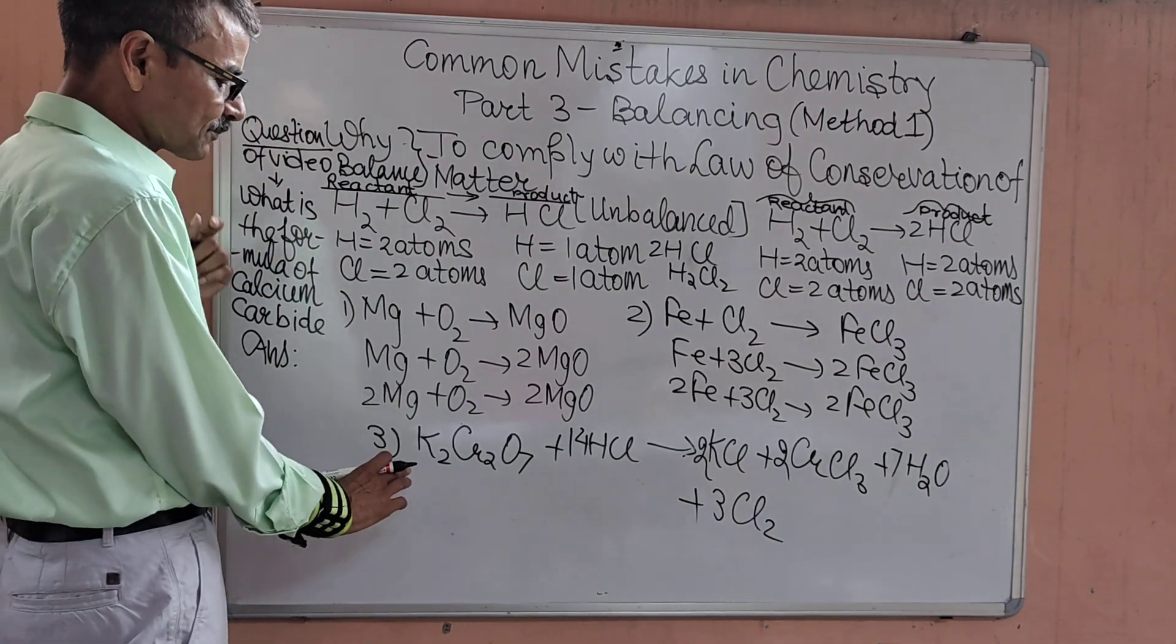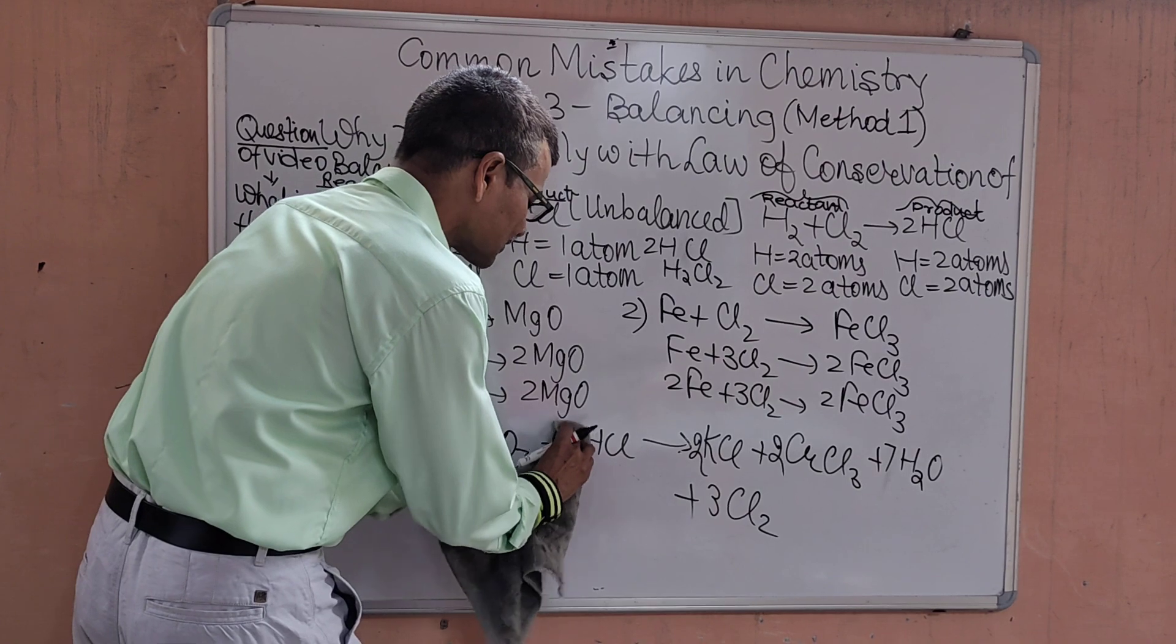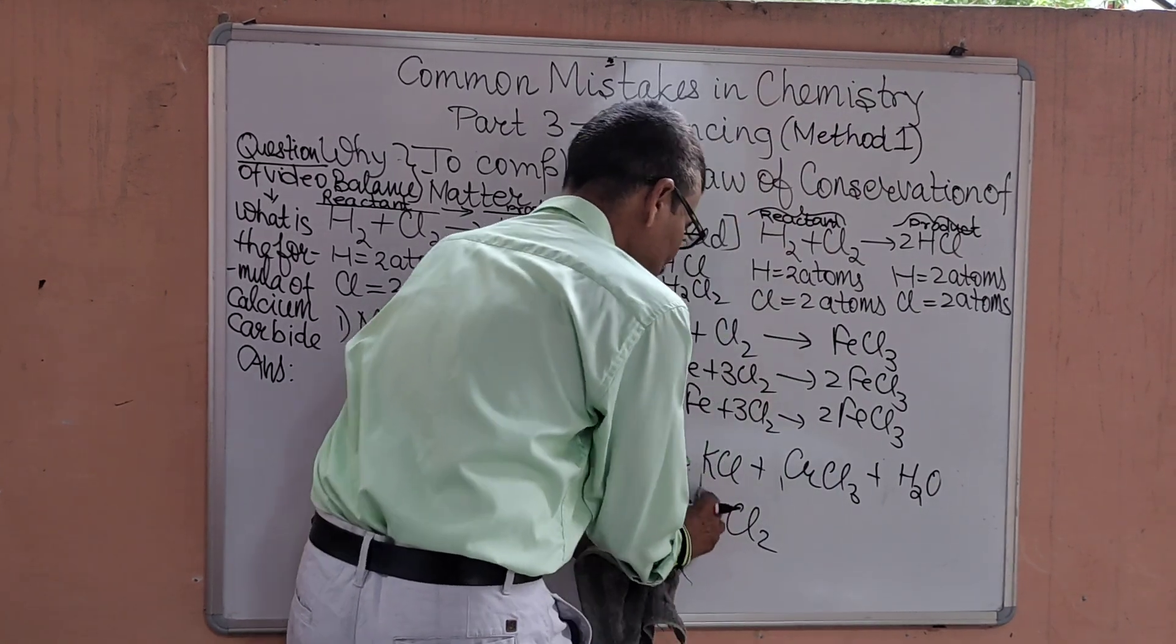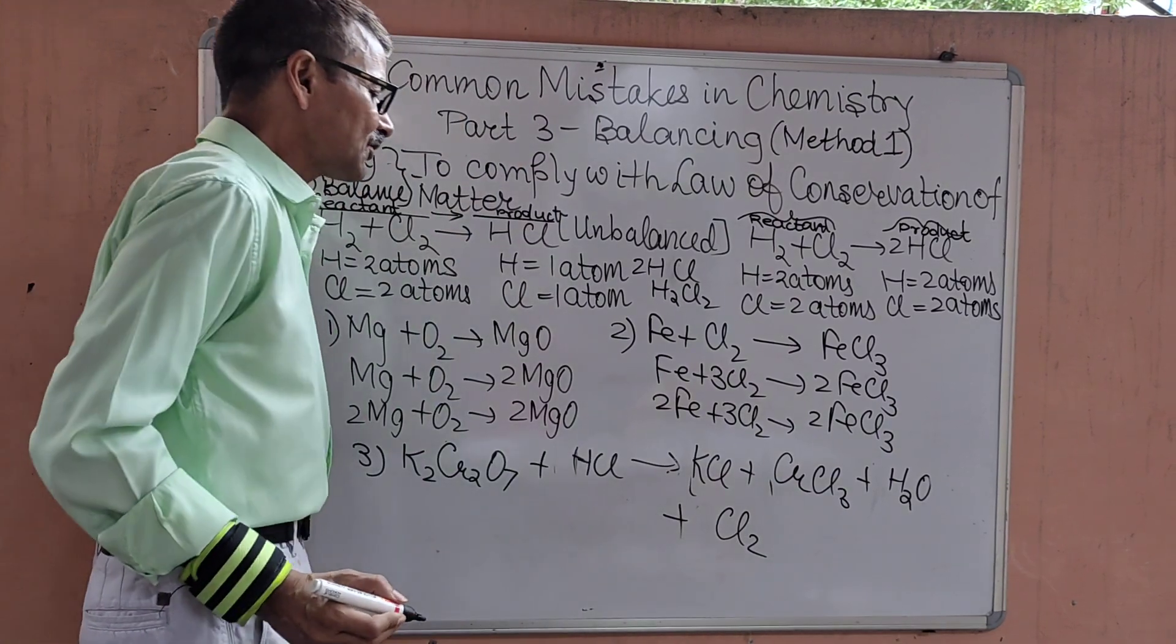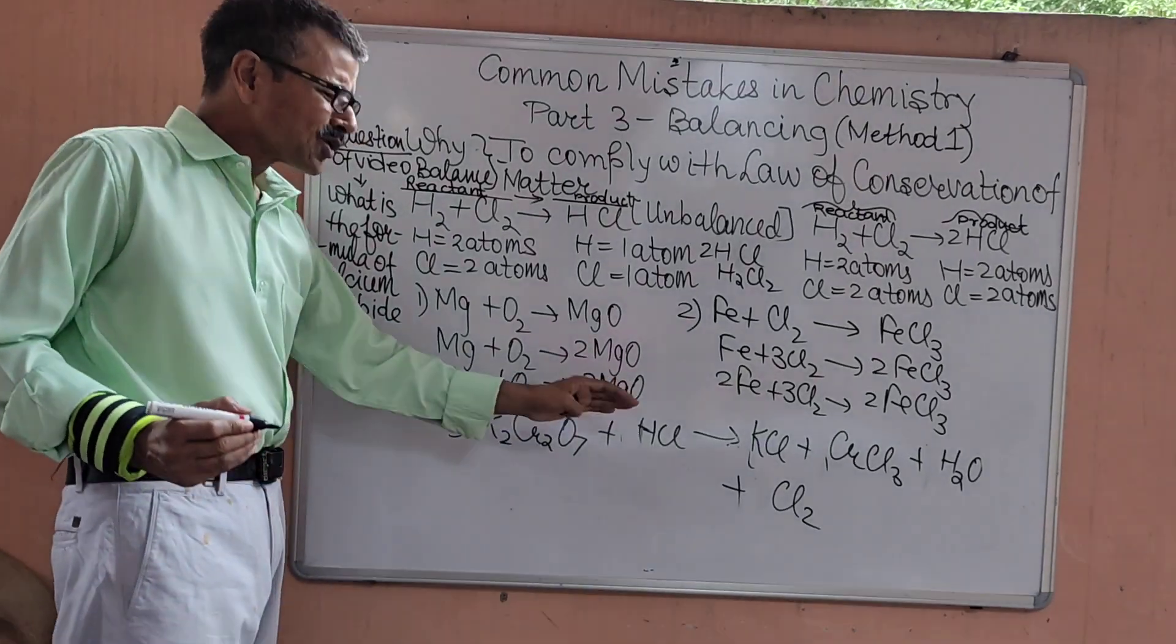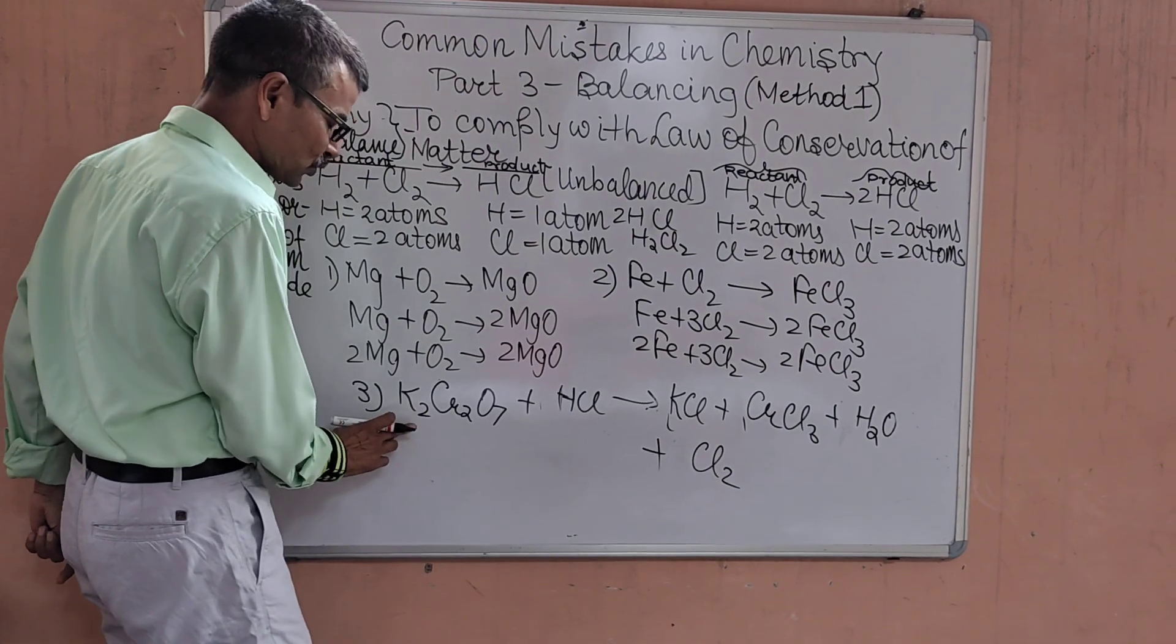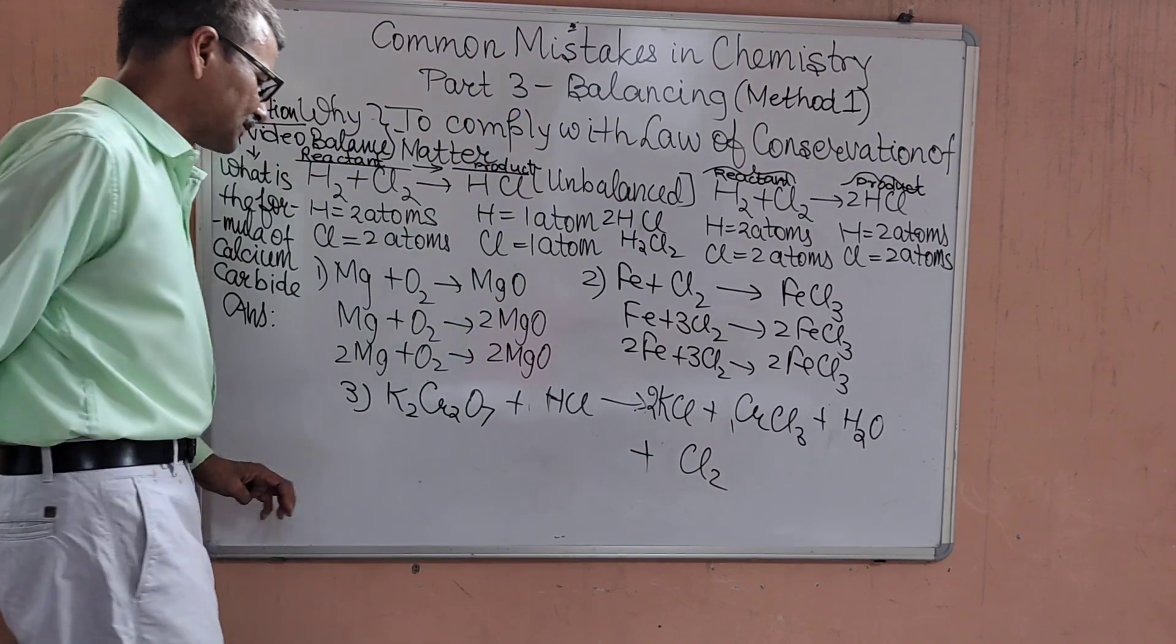The last important problem is K2Cr2O7 plus HCl giving you KCl plus CrCl3 plus H2O plus Cl2. Problem looks very long but to balance, the method is very easy. Potassium here is 2, here we multiply the compound potassium chloride by 2 and the potassium is balanced.